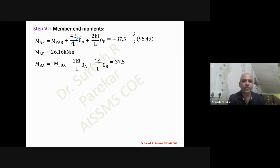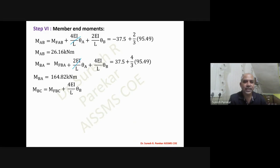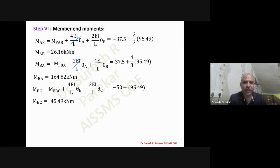For M_BA, θA = 0 so that term is zero, giving M_BA = 164.82 kN·m. For M_BC, substituting values: minus 50 + 95.49 = 45.49 kN·m.